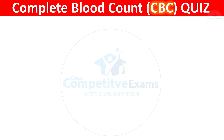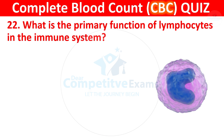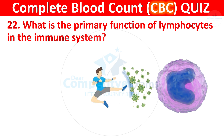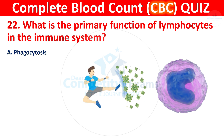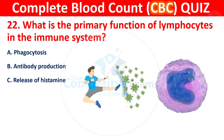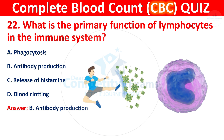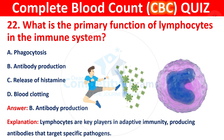Question 22: What is the primary function of lymphocytes in the immune system? Your options are phagocytosis, antibody production, release of histamine, or blood clotting. The correct answer is B, antibody production. Lymphocytes are key players in adaptive immunity, producing antibodies that target specific pathogens.